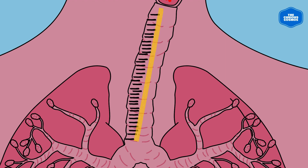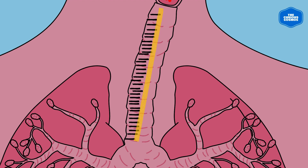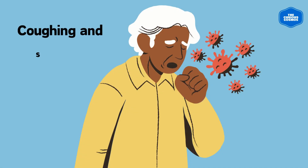The mucus is propelled towards the pharynx, where it's swallowed and eliminated. This continuous movement of mucus, known as the mucociliary escalator, effectively removes trapped pathogens before they can establish themselves in the lower respiratory tract.